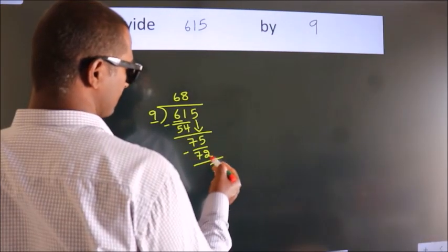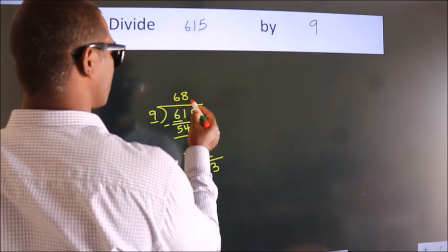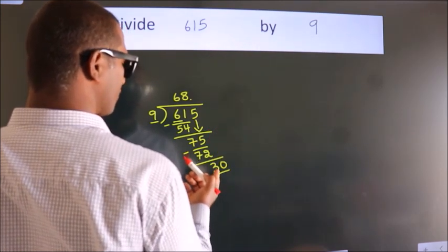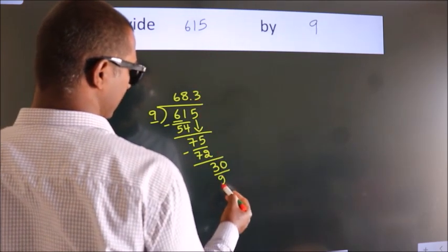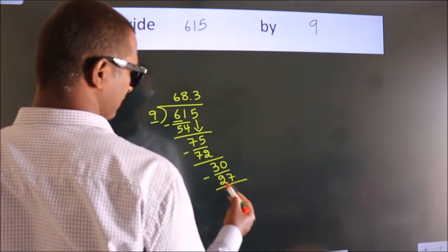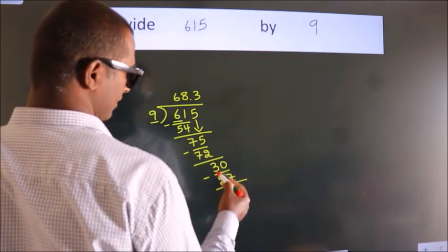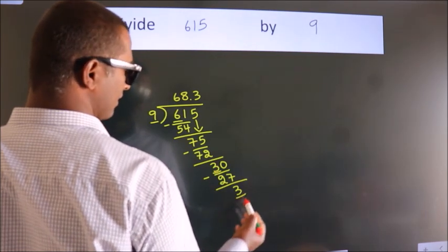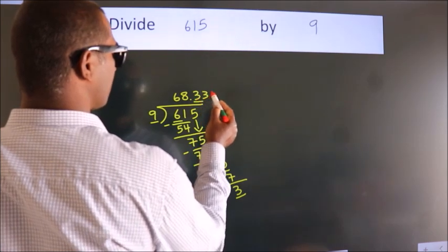After this, there are no more numbers to bring down. So what we do is put a dot and take 0, giving us 30. A number close to 30 in the 9 times table is 9×3=27. Now we subtract and we get 3. Now observe — we had 3 here, and we got 3 again. That means this number keeps on repeating.